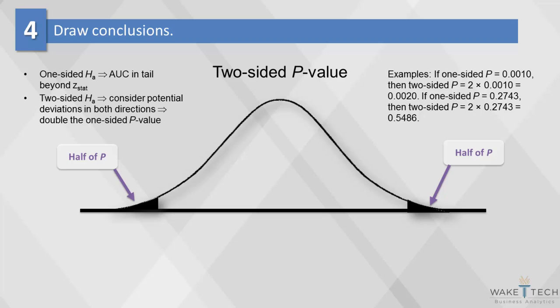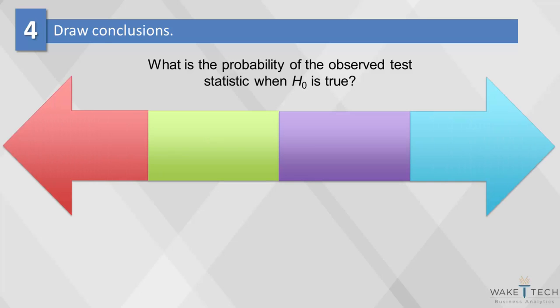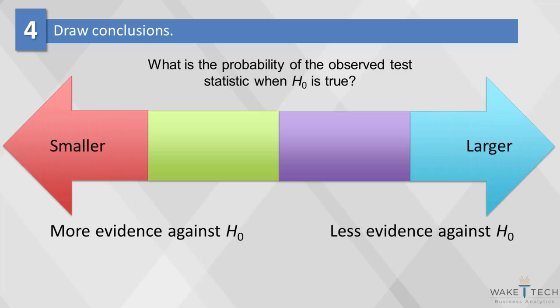Since we will be using p-values in all our subsequent analysis, it's worth emphasizing what that means. P-values ask the question, what is the probability of the observed test statistic when H0 is true? Remember, the smaller the p-value, the more likely that your null hypothesis is not true.